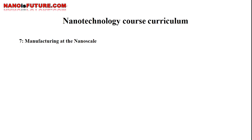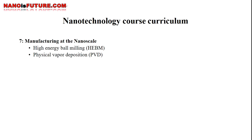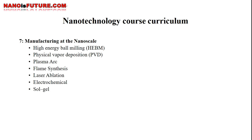In Section 7, we will learn some of the methods used for the fabrication of nanomaterials. These methods can be generally subdivided into two groups: top-down methods and bottom-up methods. Synthesis and preparation techniques discussed include high-energy ball milling, physical vapor deposition, plasma arc, flame synthesis, laser ablation, electrochemical method, solar process, and precipitation technique.